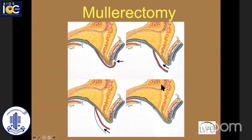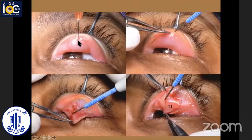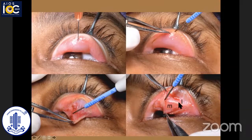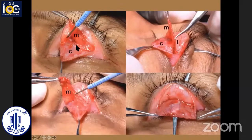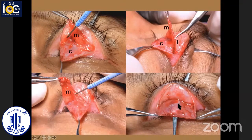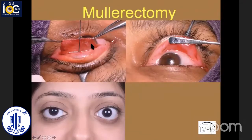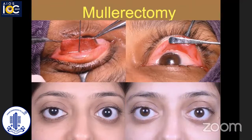For millerectomy, you evert the upper eyelid and get into two planes: one between the levator and Müller's muscle, and the other between Müller's and the conjunctiva, then simply excise the muscle. Steps include transconjunctival infiltration of the everted eyelid, incision at the upper edge of the tarsus, separating Müller's muscle from the levator, and then separating it from the conjunctiva. The Müller's is excised along the entire width of the lid. I use fibrin glue to fix this. Here is a patient who was not concerned about inferior scleral show or mild proptosis but wanted upper eyelid correction, and we chose millerectomy for her.